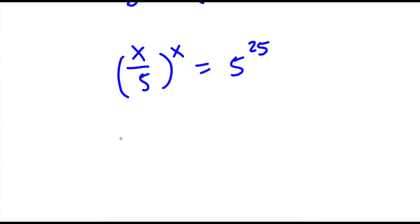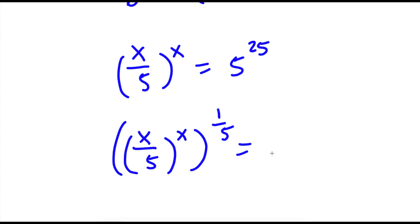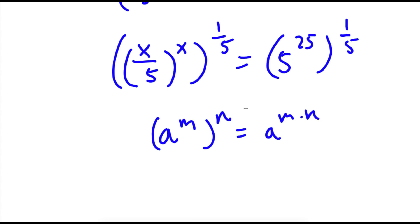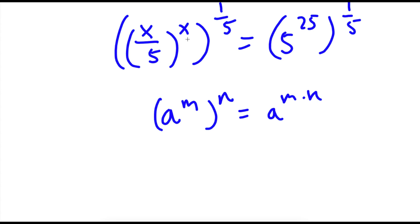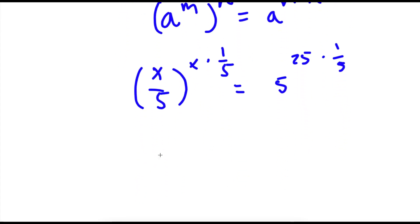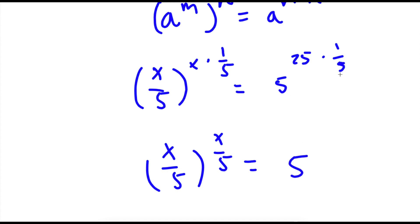So x to the power of x over 5 to the power of x equals x over 5 to the power of x, which equals 5 to the power of 25. Now if I raise both sides to the power of 1 over 5, using the rule a to the power of m to the power of n equals a to the power of m times n, I get x over 5 to the power of x over 5 on the left. On the right, 25 times 1 over 5 is simply 5, giving 5 to the power of 5.